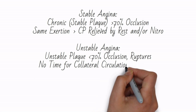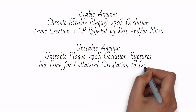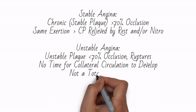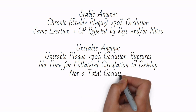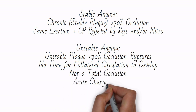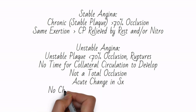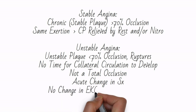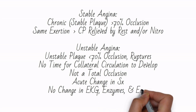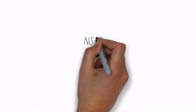Unstable plaques produce one of three acute coronary syndromes. The first is unstable angina — an acute change in anginal symptoms either with less activity or even presenting with angina at rest. The thrombosis occludes less than 100% of the affected coronary. There is no infarcted tissue and no troponin is released, and no EKG changes will usually be noted.